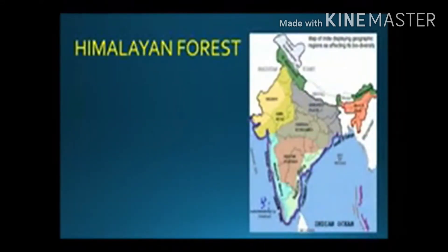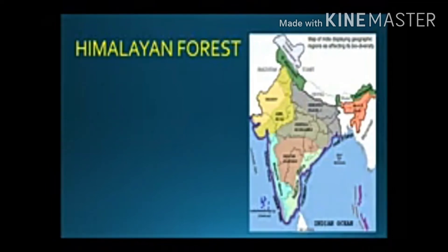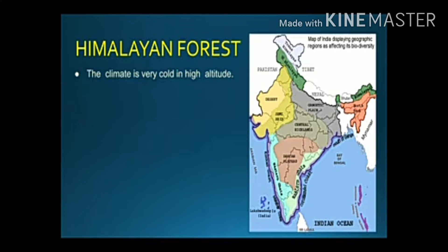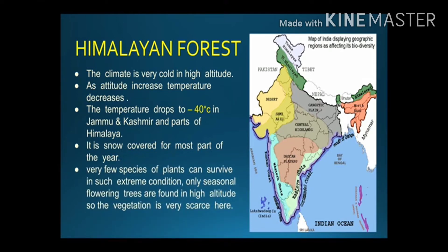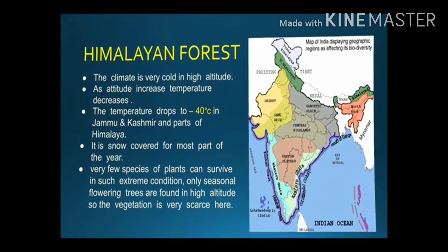Himalayan forest: the white portion on the map represents cold desert, the green below is the Himalayan forest. The climate is very cold at high altitude — as altitude increases, temperature decreases. Temperature drops to minus 40 degrees Celsius in Jammu and Kashmir and parts of the Himalayas. It is snow-covered for most of the year, and very few species of plants can survive in such extreme conditions — only seasonal flowering trees are found at high altitude, so vegetation is very scarce.